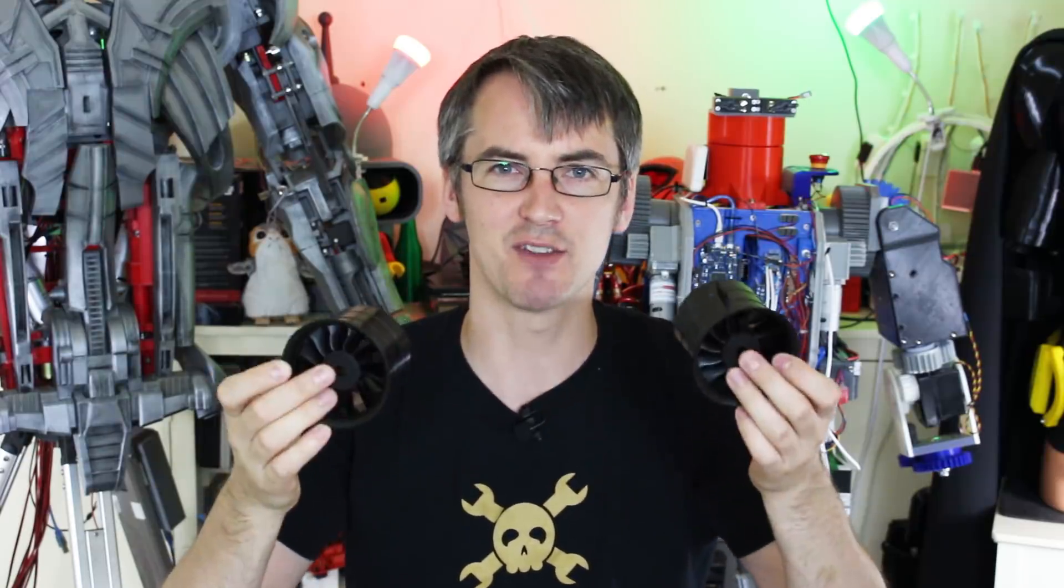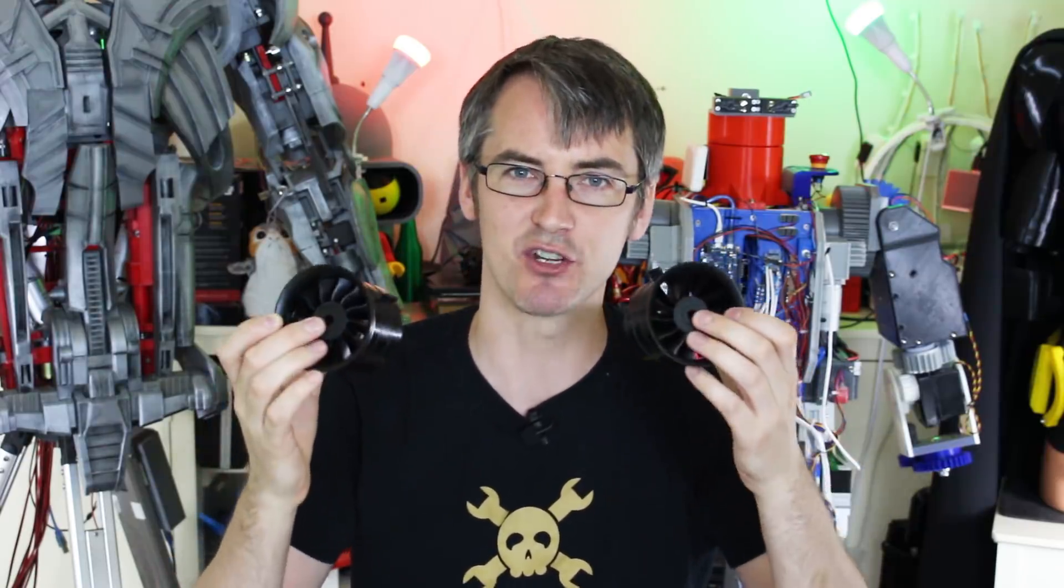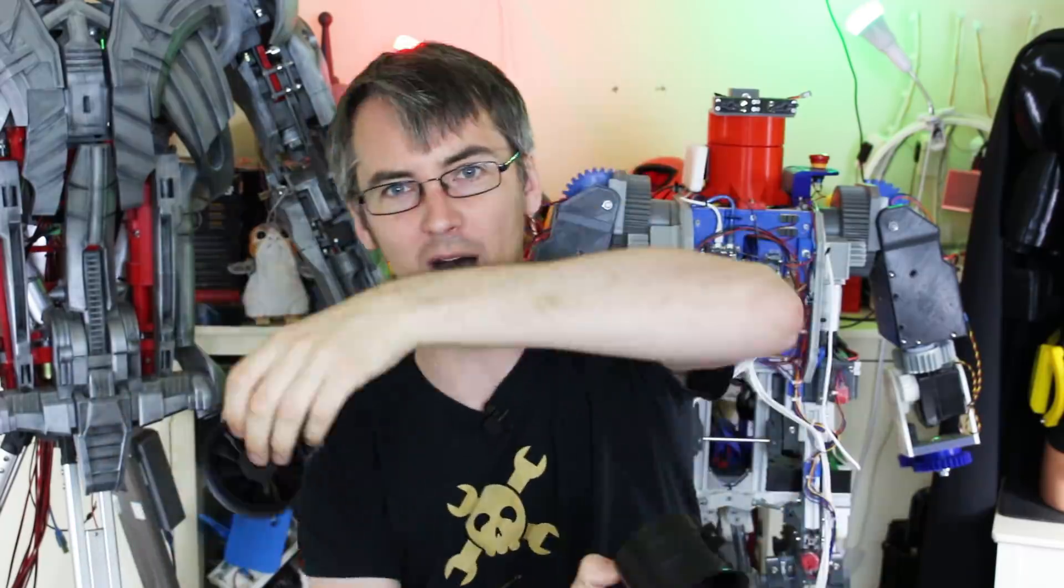Now, the problem with EDFs is I can't buy counter-rotating versions. There are some, but they're really expensive, so these all spin in the same direction. And normally on a quadcopter you have four rotors, two going one direction and two going the other direction, and that stops it spinning the other way with the recoil of the motors. So the problem we're going to have with three EDFs, that are really fast, all spinning in the same direction, it's going to make the rocket spin the other way. So we need to do something about compensating for that in the design.